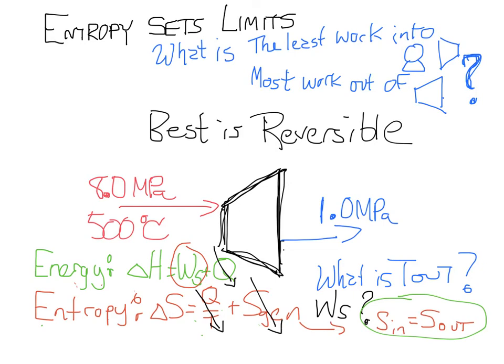Okay, so that's what you're going to do, and then when you do that, you will know what T out is, and you will be able to look on the steam tables and figure out what H out is, and you'll be able to get delta H.